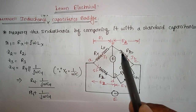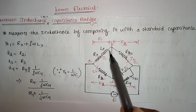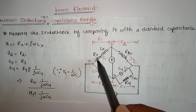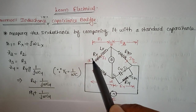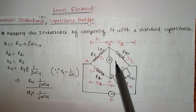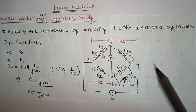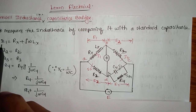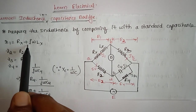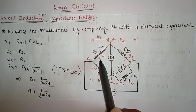It consists of four arms, as in the previous bridge. Arm one consists of inductance Lx and resistance Rx — we have to measure these values Lx and Rx. For this bridge we write the impedance equations individually for each arm. The impedance equation for arm one: Z1 = Rx + jωLx, where Rx is the resistance and jωLx is the reactance.